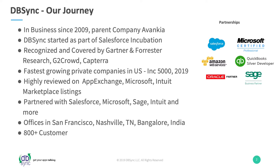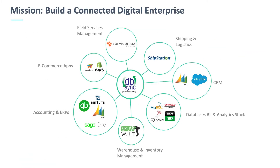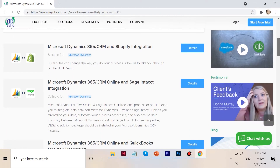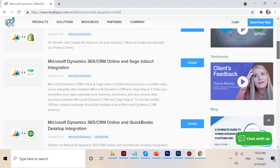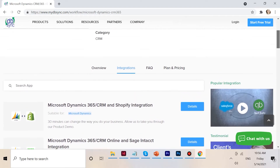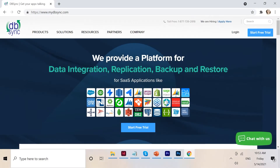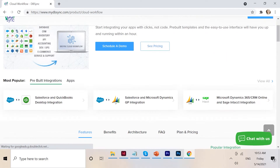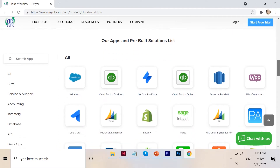We have offices in San Francisco, Nashville, and Bangalore, and a bunch of folks who work remote. At this point, we have over 800 customers using DBSync to connect their digital business. This can look like a lot of different things — in today's use case we're talking about Dynamics and QuickBooks integration, CRM and accounting integration. But beyond that, we connect a whole range of applications including e-commerce, field service management, shipping and logistics software, warehouse and inventory management, and databases as well.